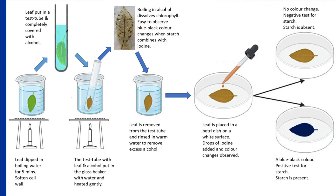The alcohol dissolves chlorophyll and other pigments, leaving behind a translucent or almost colorless leaf. This makes it easy to observe blue-black color changes when starch combines with iodine. After heating in alcohol, the leaf is removed and rinsed in warm water to remove excess alcohol. The leaf is then placed in a petri dish on a white surface, a few drops of iodine solution are added, and the color change is observed. A blue-black color is a positive test for starch; no color change is a negative test.